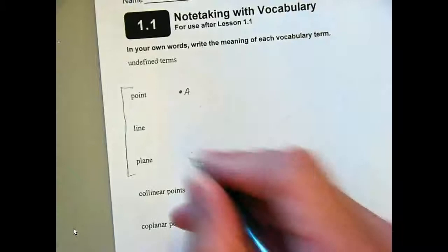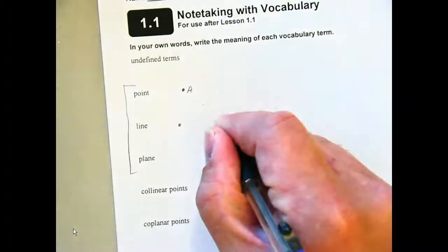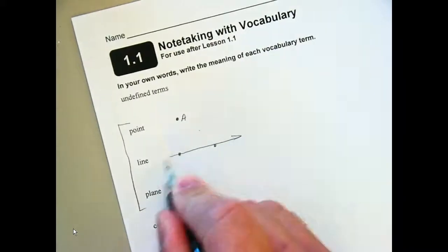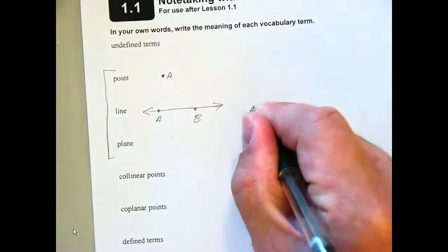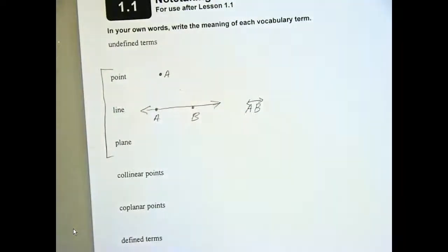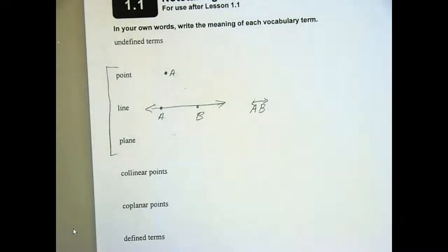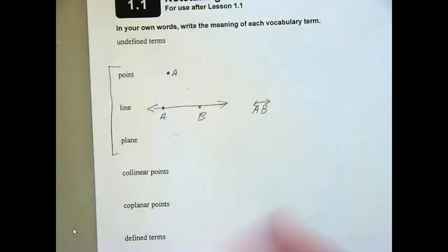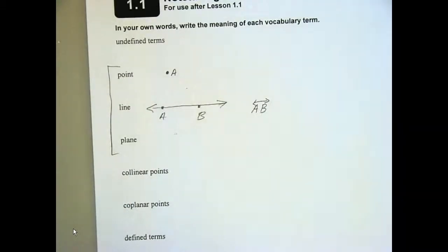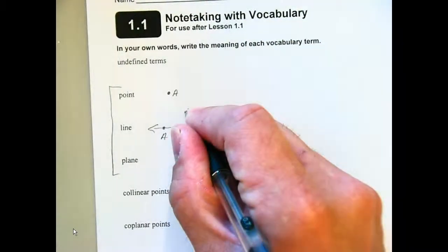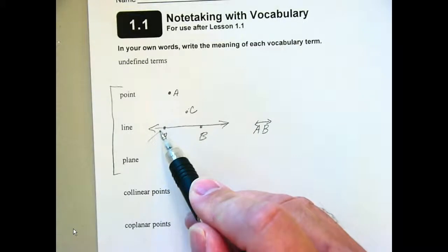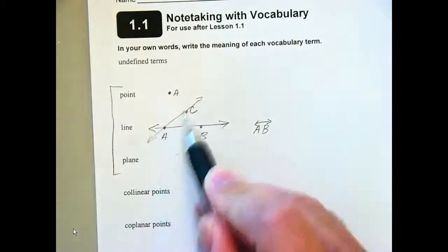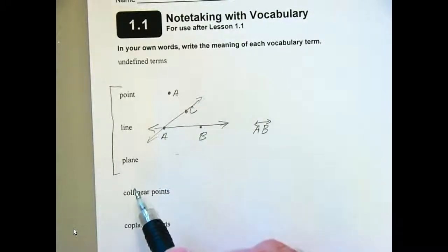A line connects — goes through two points, actually. So if I have two points, I can draw a line. We'll call that A and B. Mathematically, our symbol for that is line AB — we write it like that, with arrows on the end. That's how we write them. Any two points can form a line. If I put another point out here, called C, I could draw line AC. That would just be another line going through point A and point C.